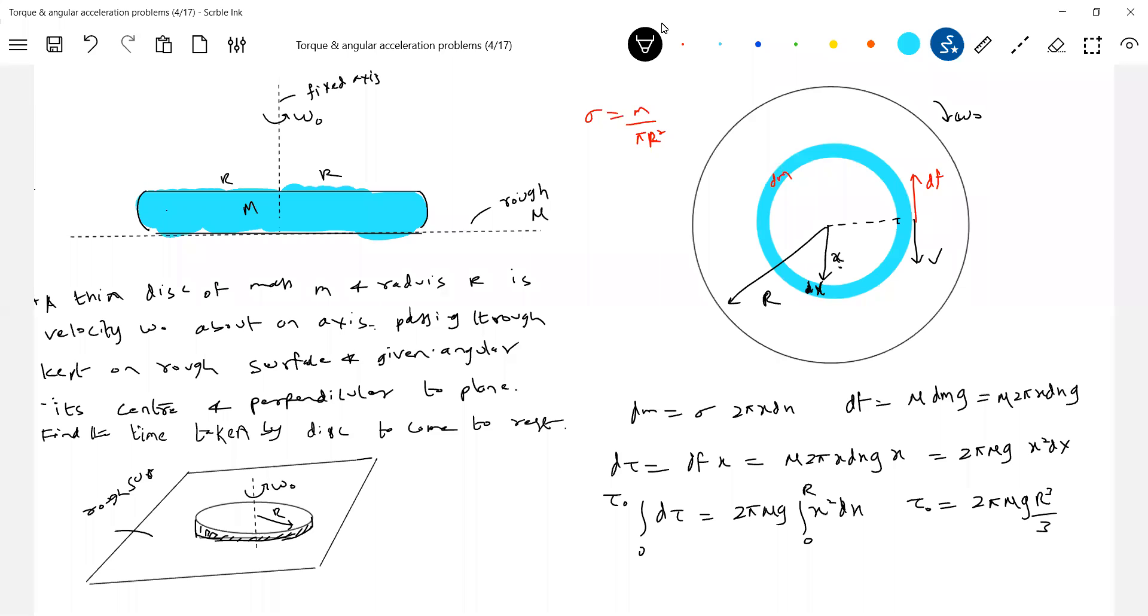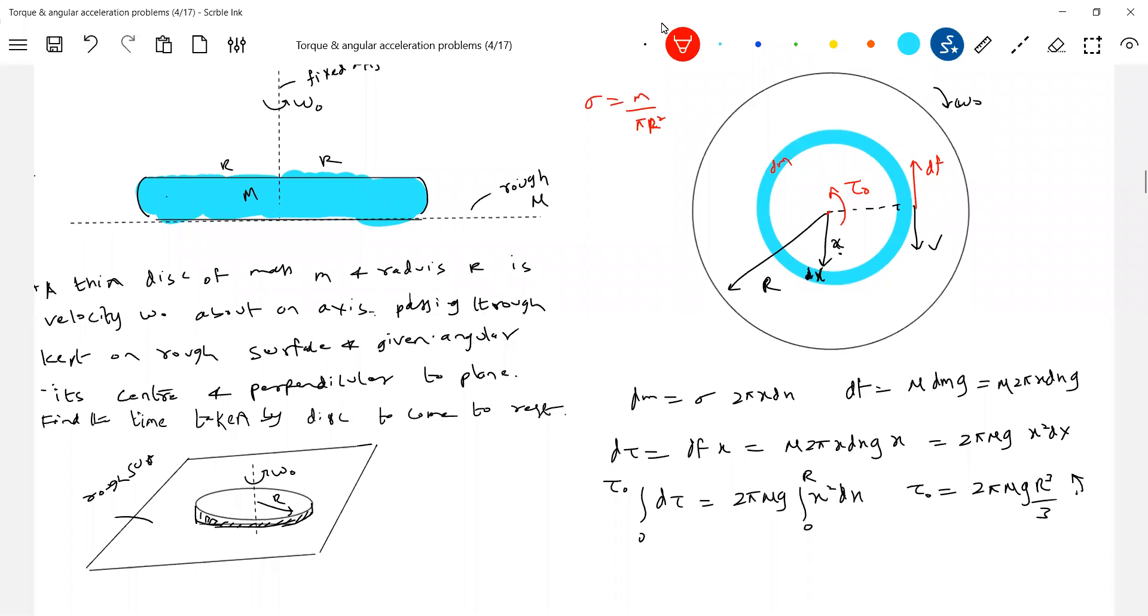How does this torque act? This torque will act in this direction, opposite to angular velocity. So the resultant torque will be acting like this. So it will undergo retardation. Look at this torque. Is it constant or variable? Let's calculate angular acceleration.